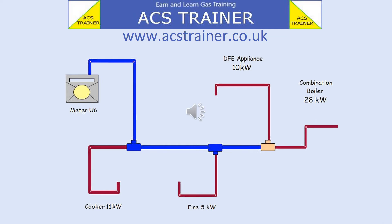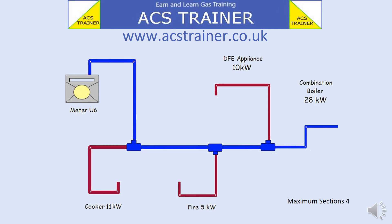Also, from the third tee to the combi boiler equals four sections. Therefore, the maximum sections for this installation is four sections — from the meter through to either the DFE or the combi boiler. This equals four sections shown in blue.